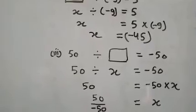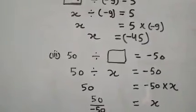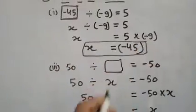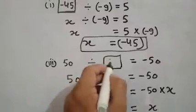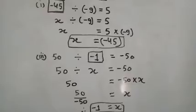Therefore, minus 1 will be the answer. So 50 is divided by minus 1 got minus 50.